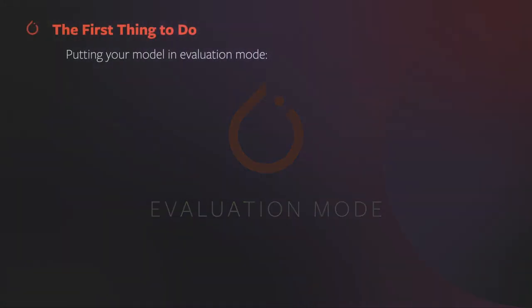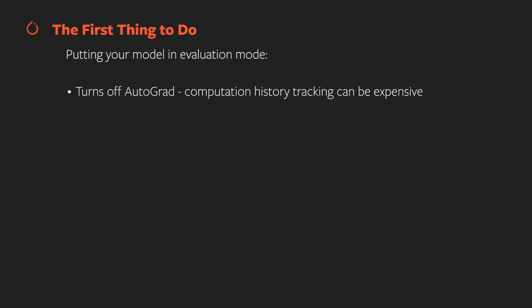No matter which deployment method you use, the first thing you should always do is put your model into evaluation mode. Evaluation mode is the opposite of training mode — it turns off training-related behaviors that you don't want during inference time. In particular, it turns off Autograd. PyTorch tensors, including your model's learning weights, track their computation history to aid rapid computation of backward gradients for learning, which can be expensive in terms of both memory and compute, and is not something you want at inference time.